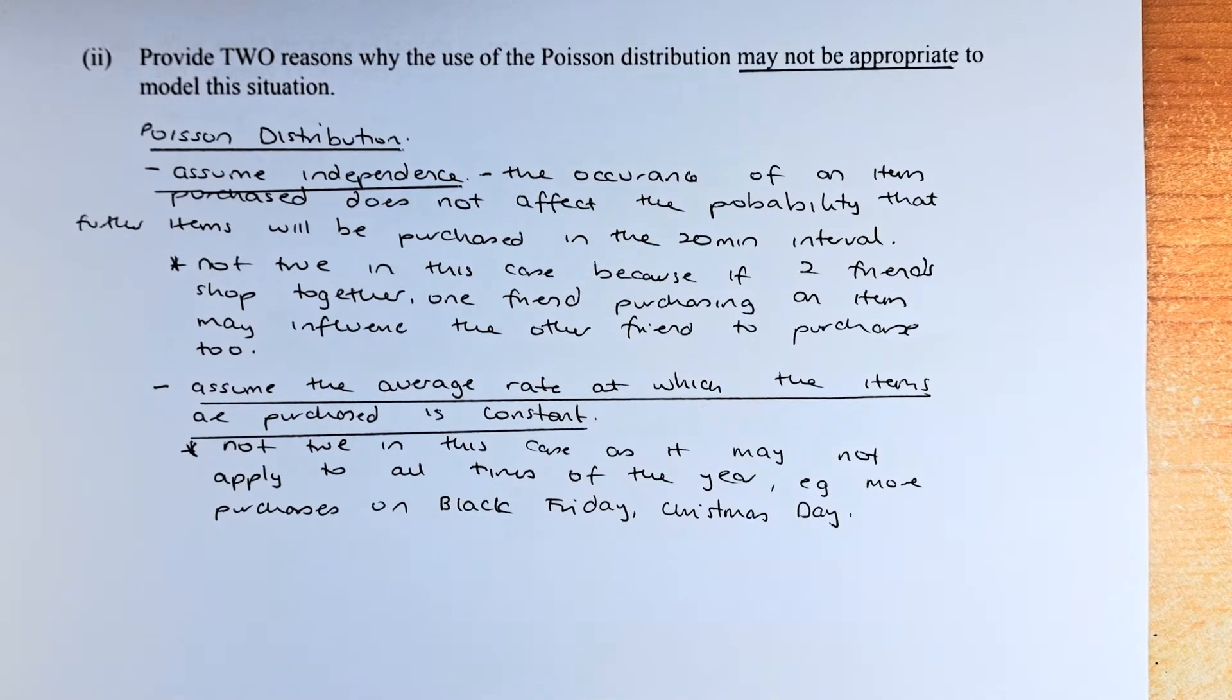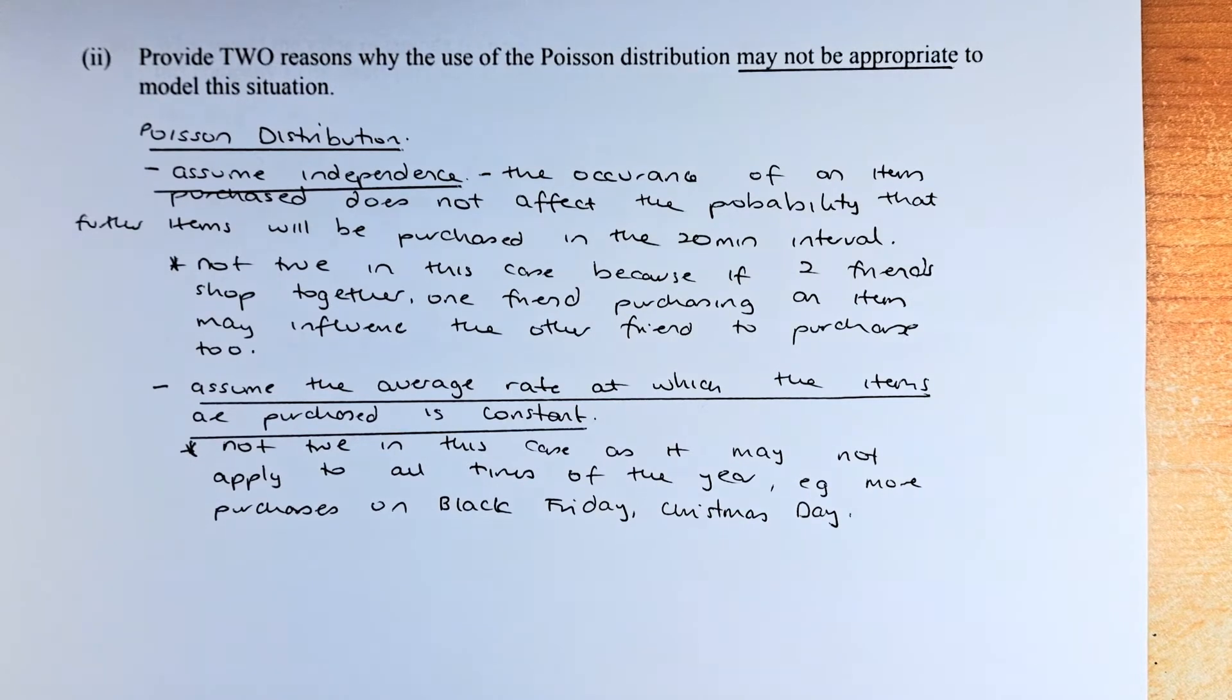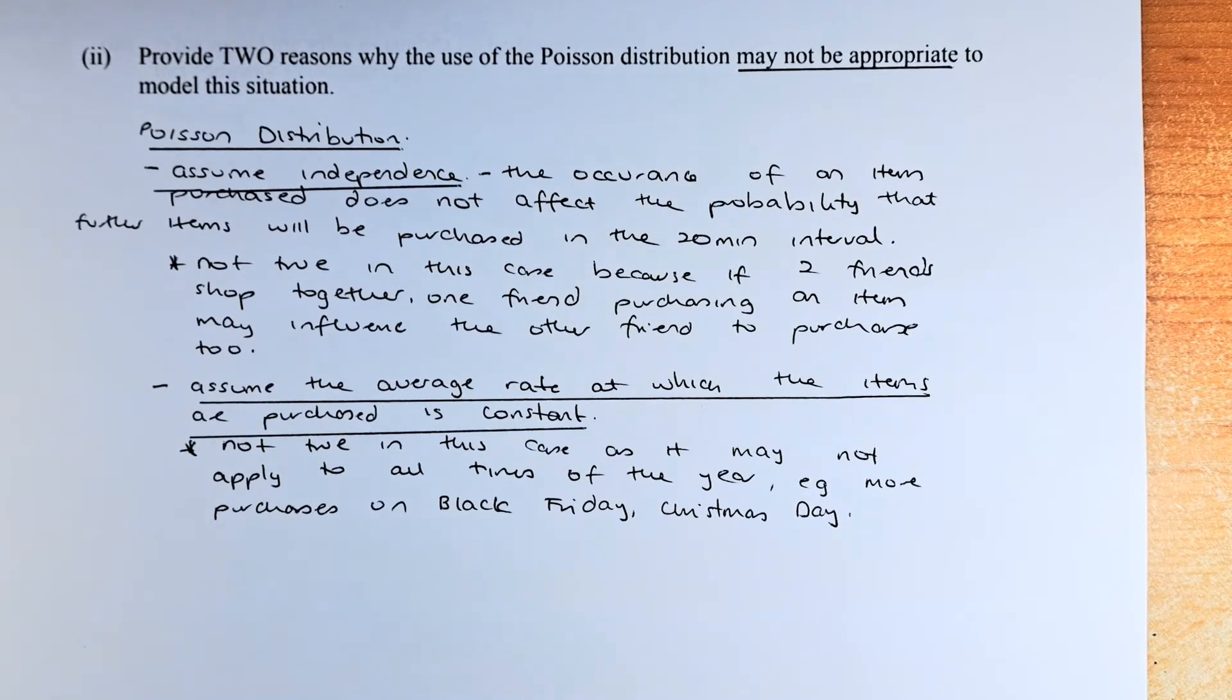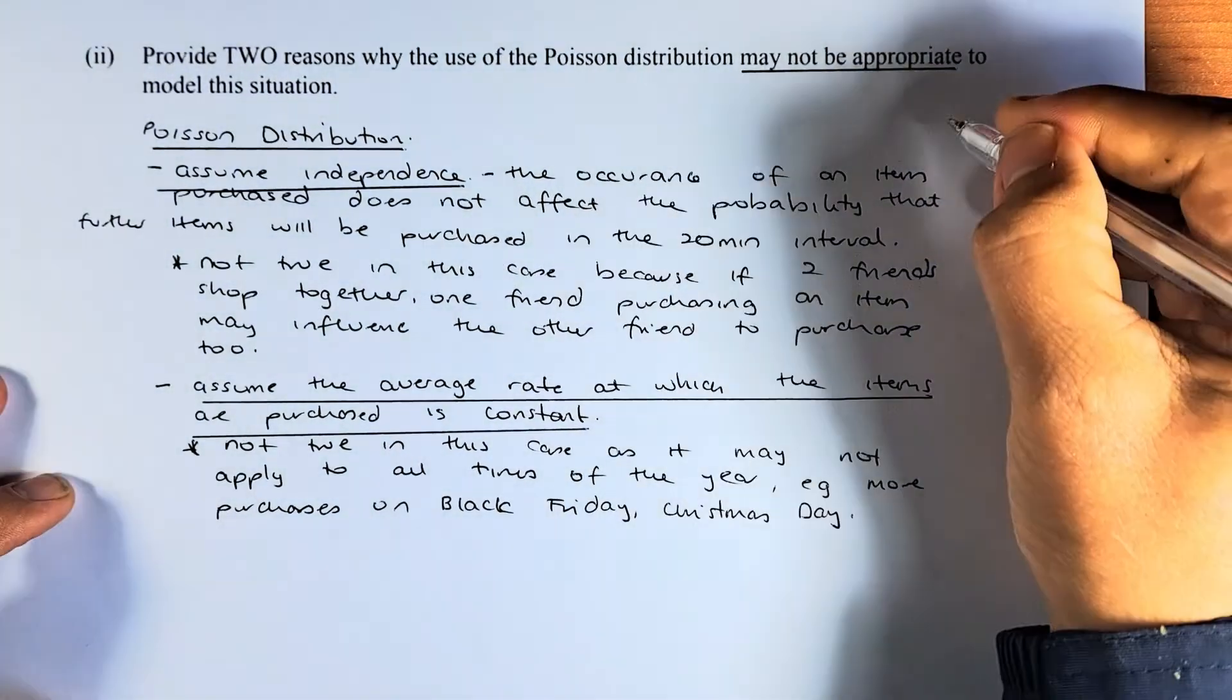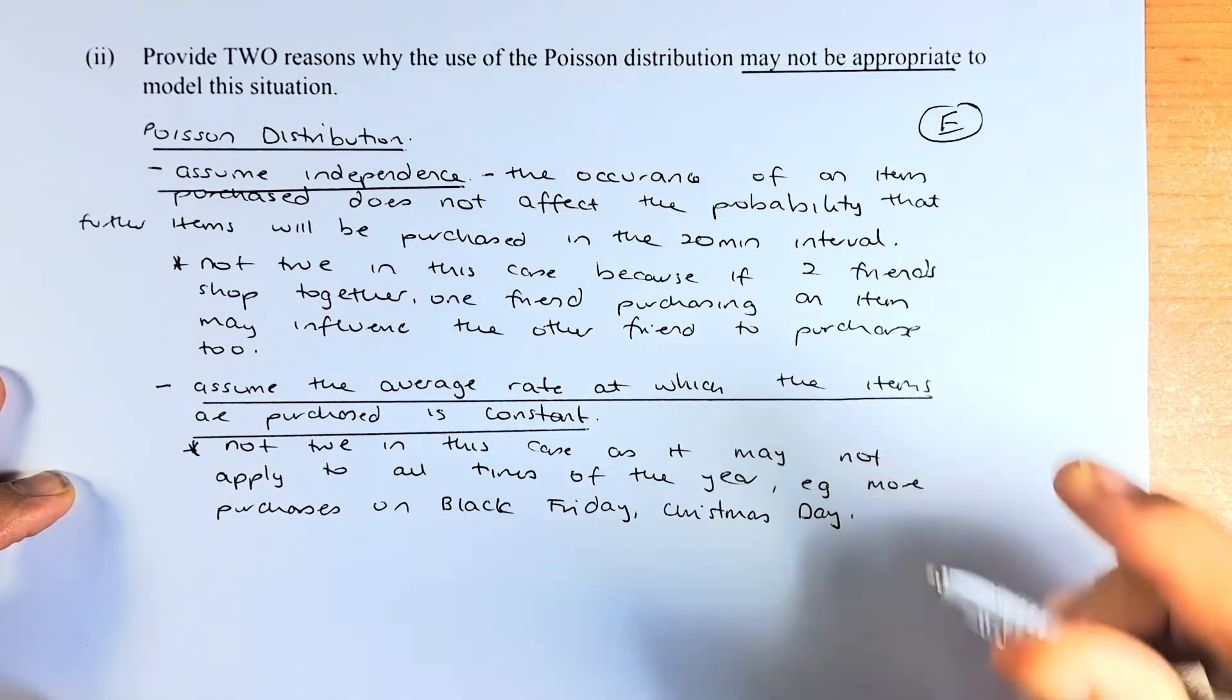The second one, assume that the average rate at which the items are purchased is constant. Again, this is not true. The purchase time is not constant at all times of the year. Because some years, for example, the Black Friday sales or we have the Christmas Day or Boxing Day sale, the purchase of the item will be more than the usual time. So that is the 2 reasons. If you can answer them, that is an excellence in this question.